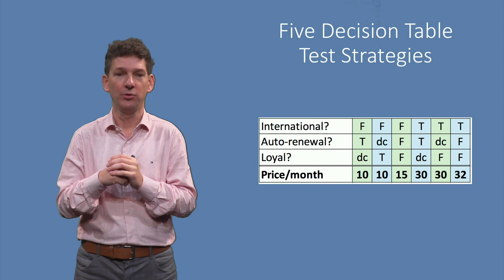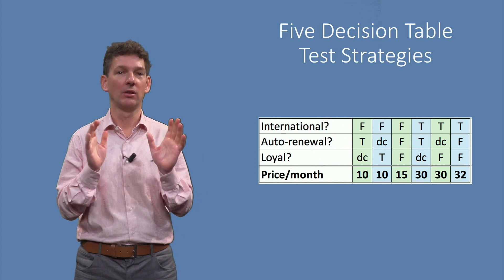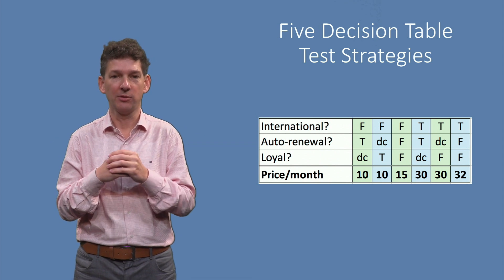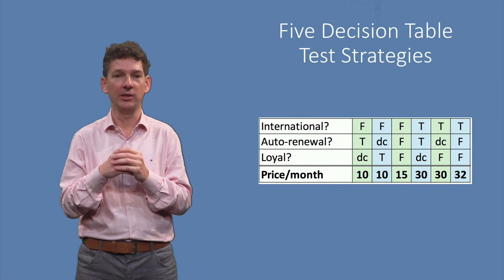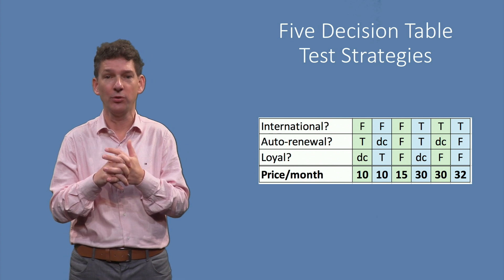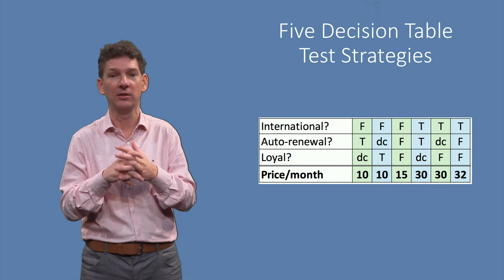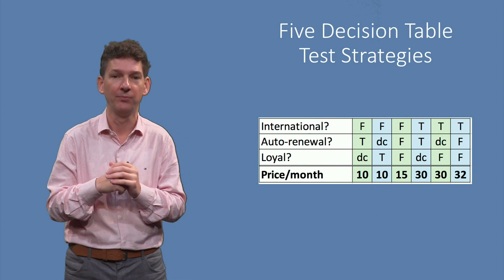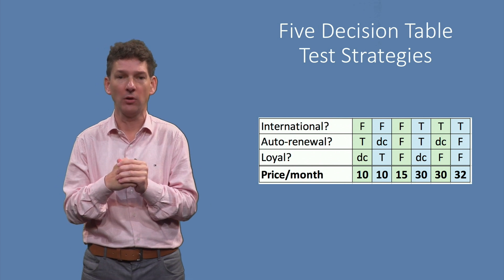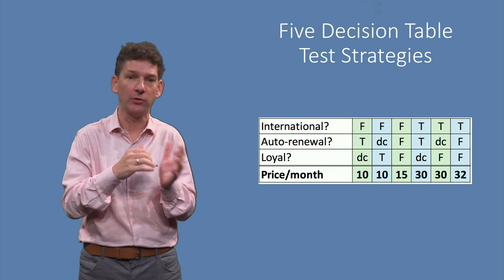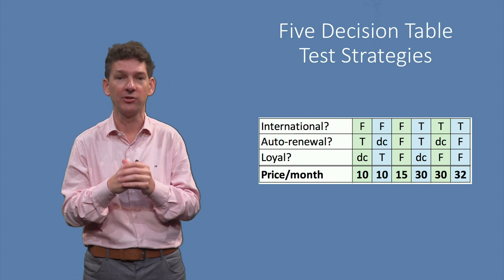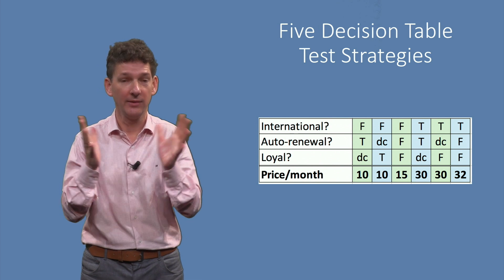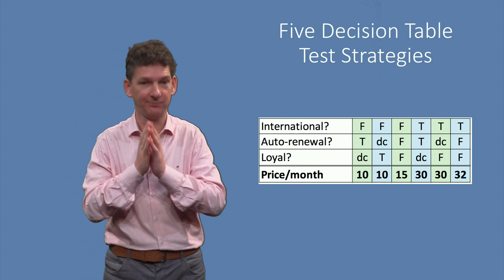Which test cases do you choose? Why? And, as part of your strategy, to how many test cases would your strategy lead for an arbitrary decision table? How does the number of columns, the number of conditions, or actions affect the number of tests? Think about this briefly.